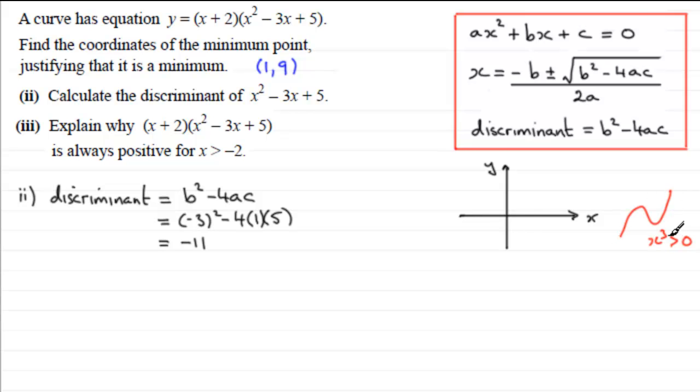It's got a minimum point at (1, 9), so let's just mark that in at 1 across, 9 up. We can see that when x is minus 2, y would be equal to 0 where it crosses the x-axis. So we know it crosses at minus 2.